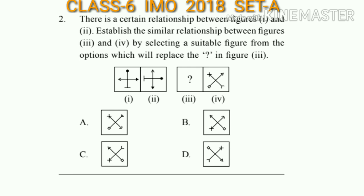Question number 2: There is a certain relationship between figures I and 2I. Establish the similar relationship between figures 3I and IV by selecting a suitable figure from the options, which will replace the question mark in figure 3I. In figure 2I, the arrow line is moved 90 degrees in the clockwise direction and the other line is also moved 90 degrees clockwise. In the same way, figure 3I will be option C.